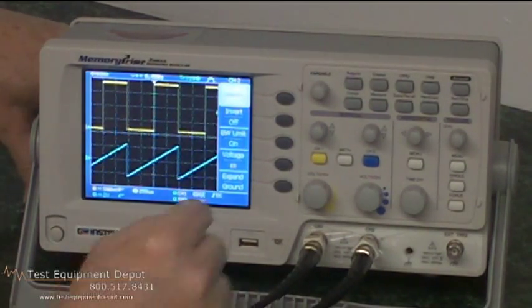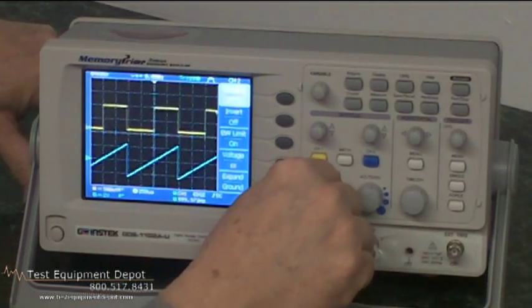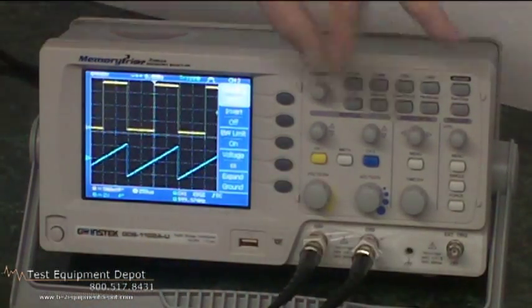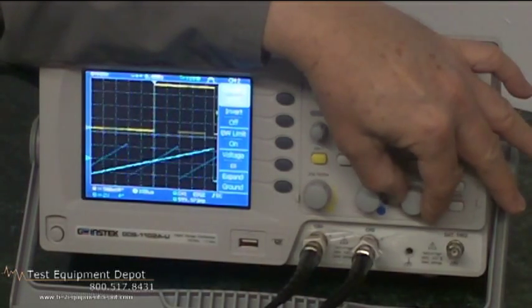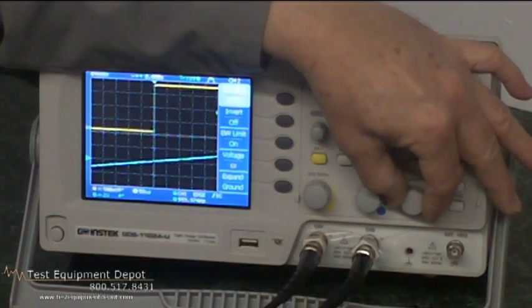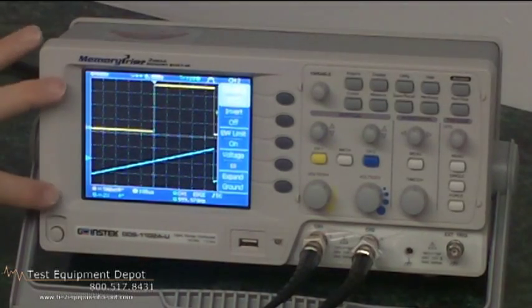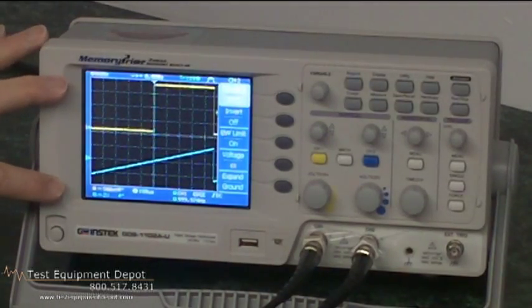2 millivolts to 10 volts per division vertical scale. It has a 1 nanosecond to 50 nanosecond per division horizontal range. It has a 5.7 inch TFT LCD display.